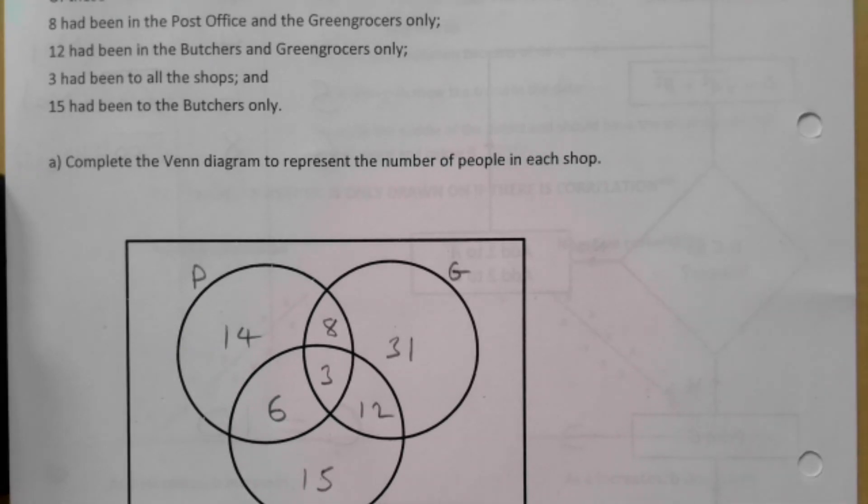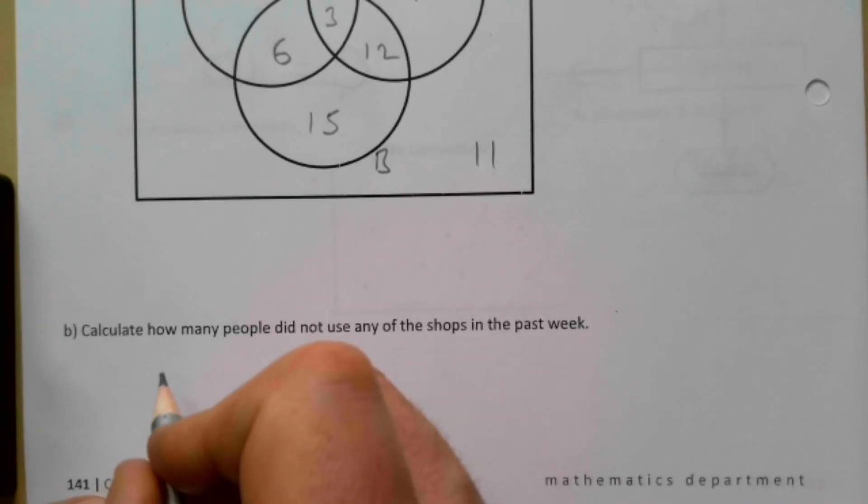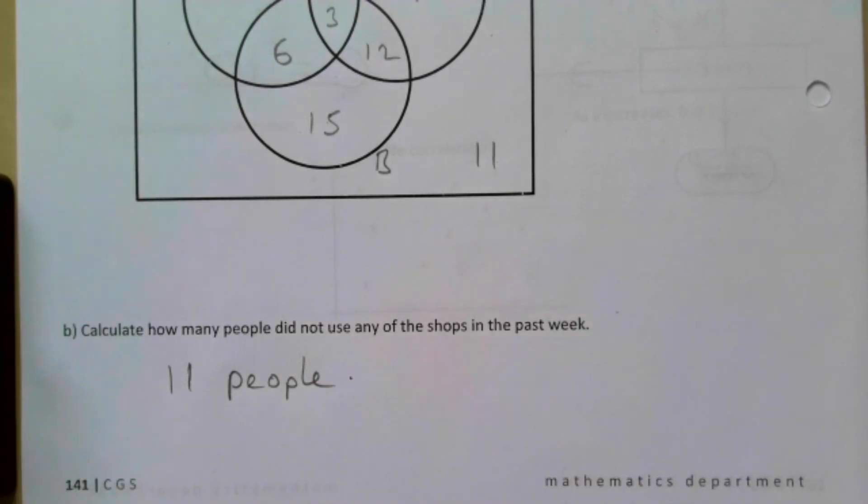Which means then, if it's 100 total, there should be 11 outside here. And so the answer then down here is going to be 11 people.